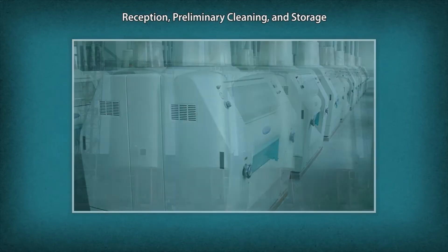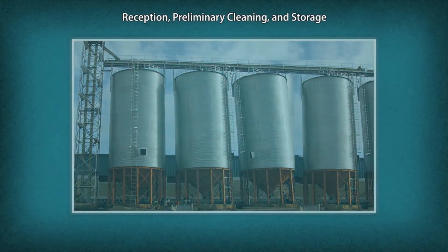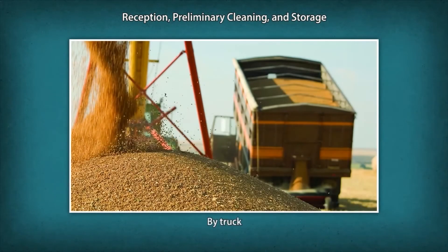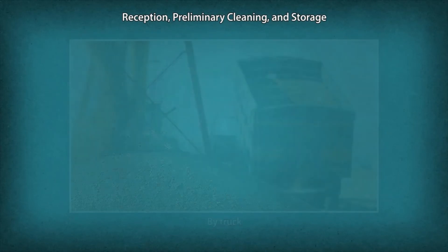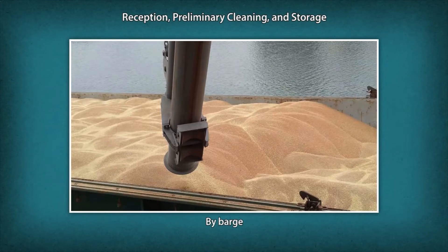Reception, Preliminary Cleaning and Storage. Food grains arrive at mill elevators by truck, rail, barge or ship, and are transferred by conveyors to the elevator head house.